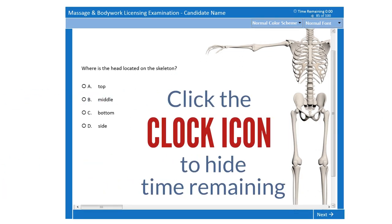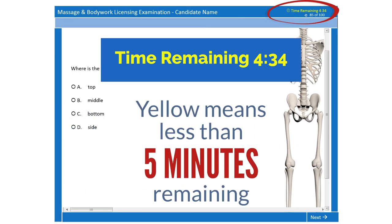You can see how much time you have remaining in the upper right corner of the screen. If you don't want to view the time remaining during the exam, click the clock icon to hide the time remaining. When there is less than 5 minutes remaining, the time remaining is displayed in yellow as a warning that time is about to expire.